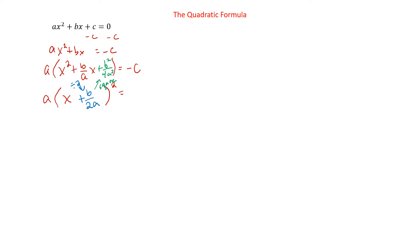If we add that to the left side, we have to add it to the other side too. But the other side has this a out in front as well, so we'll add a times b squared over 4a squared. That leaves us with negative c plus ab squared over 4a squared. So here we have completed the square. We're left with a times x plus b over 2a squared equals negative c plus ab squared over 4a squared.